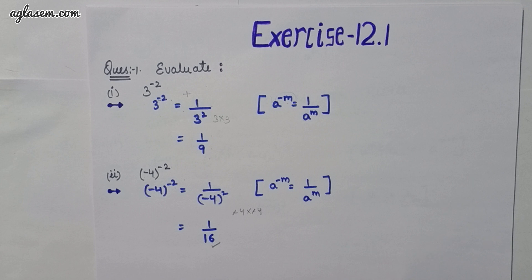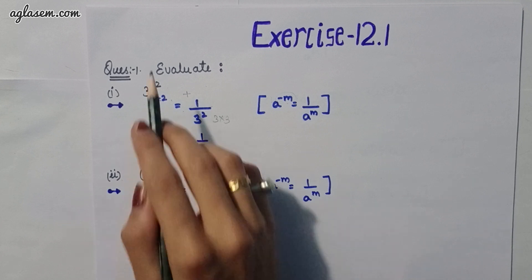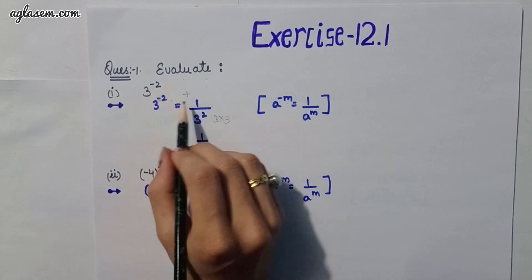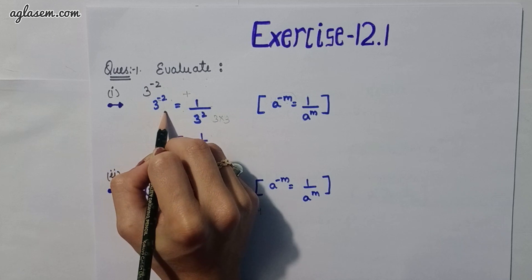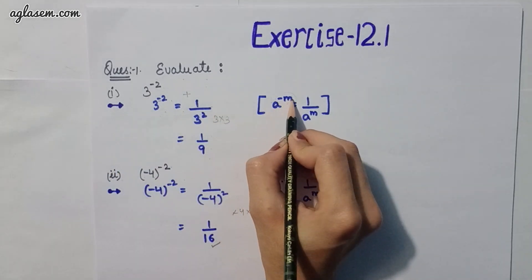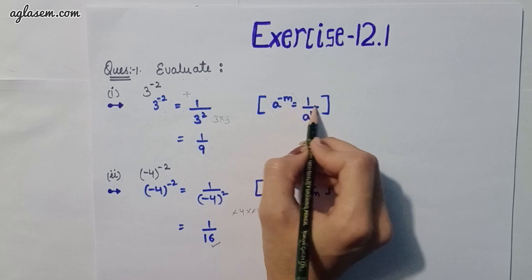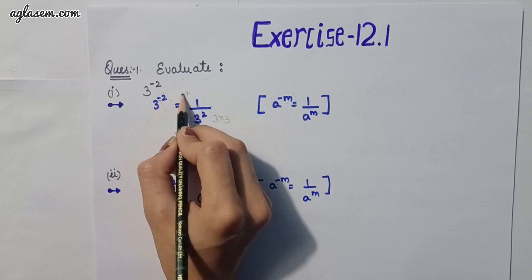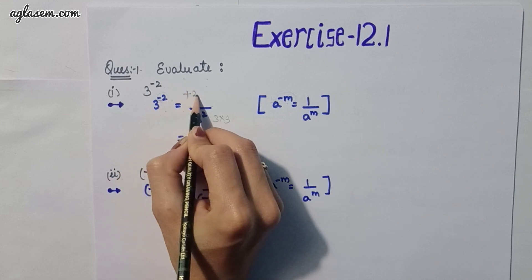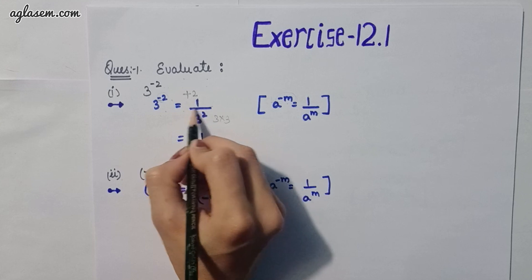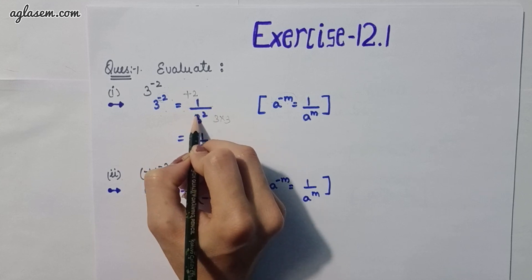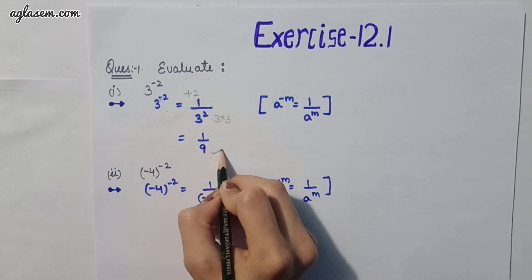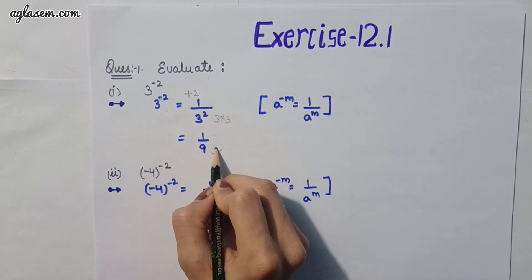Starting with the first question: evaluate. The first part is 3 power minus 2. To solve this we apply the formula a^(-m) = 1 / a^m. Therefore the minus 2 turns into plus 2 in the denominator, giving us 1 / 3^2, that is 1 / 9, since 3 × 3 = 9.